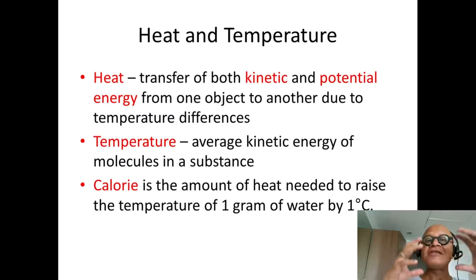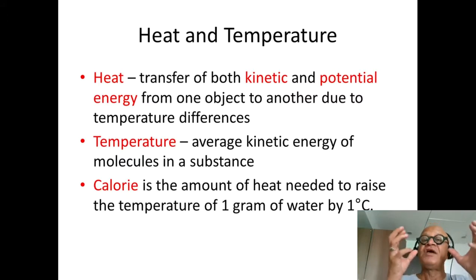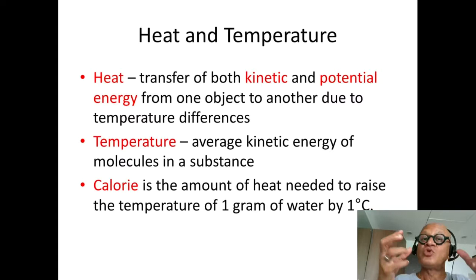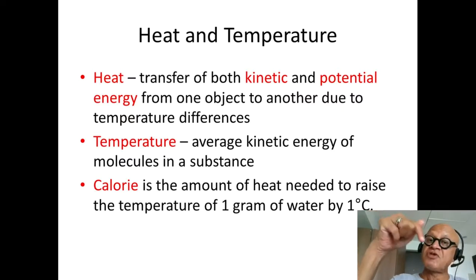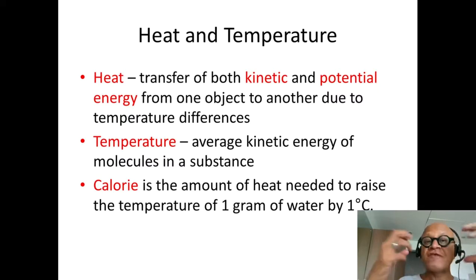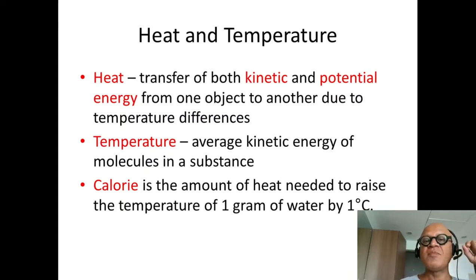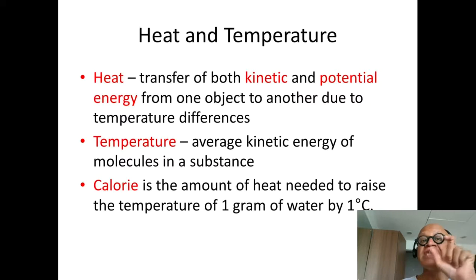Heat, on the other hand, is the amount of energy contained by a certain number of molecules. A glass of hot water has a certain amount of heat — it determines how long it takes to cool. A thermometer just tells you the average temperature of the liquid. Heat is essentially the transfer of both kinetic and potential energy from one object to another because of temperature differences, flowing from high temperature to low temperature.